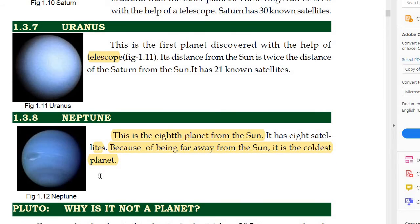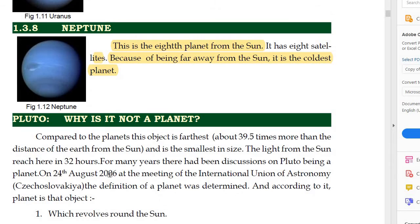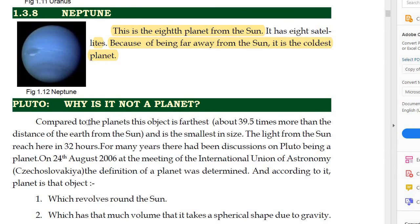To summarize: the colder planet is Uranus and the coldest planet is Neptune. The brightest planet is Venus and the brighter planet is Jupiter. Now, why is Pluto not a planet? Compared to the planets, Pluto is the farthest and is the smallest in size.